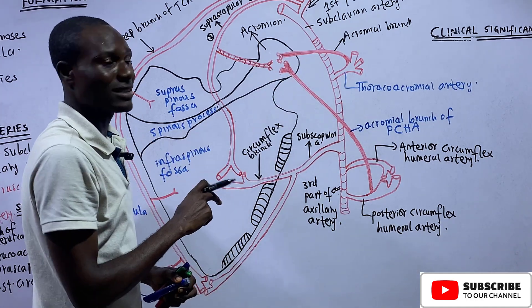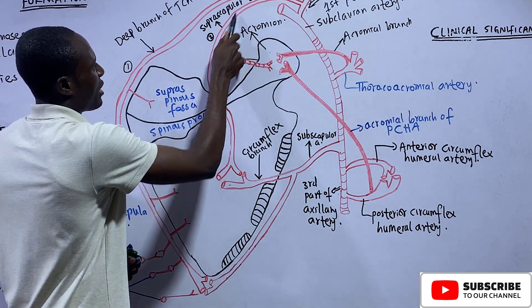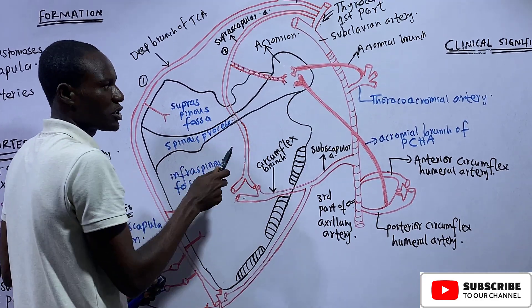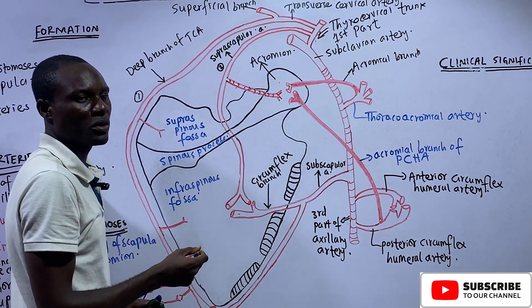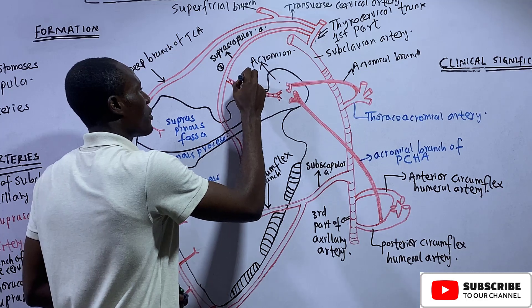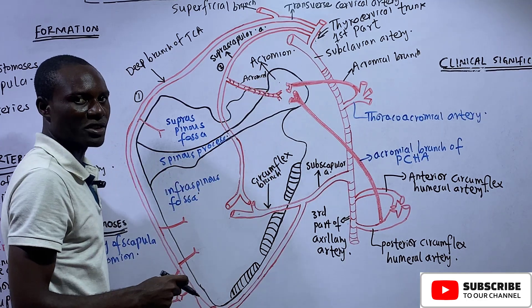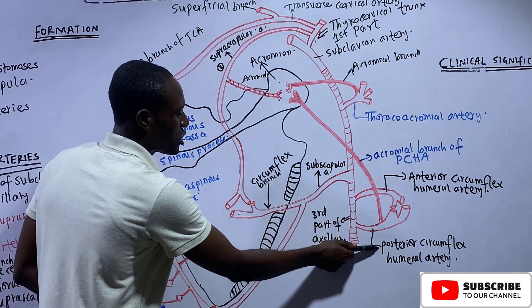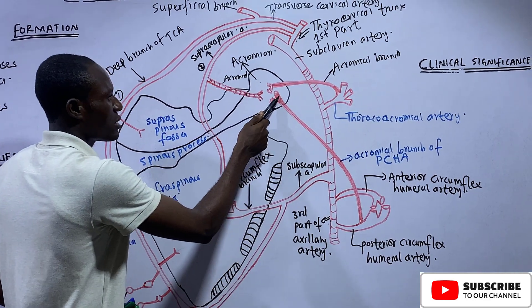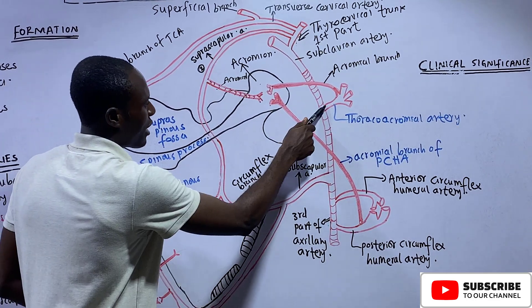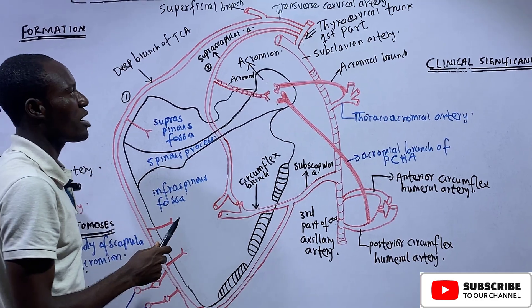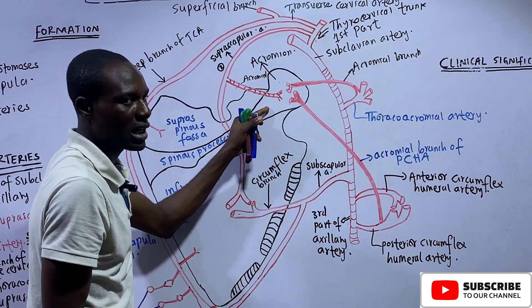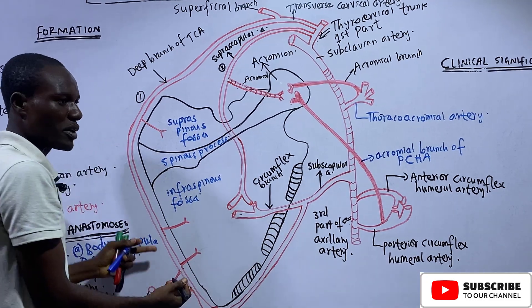Before the suprascapular artery passes through the suprascapular notch, it gives off an artery that goes to the acromion — the acromial branch of the suprascapular artery. So the anastomosis around the acromion is formed by: the acromial branch of the posterior circumflex humeral artery, the acromial branch of the thoracoacromial artery, and the acromial branch of the suprascapular artery.